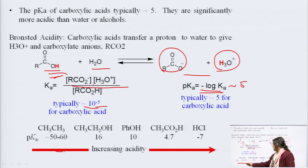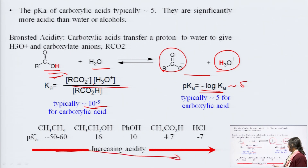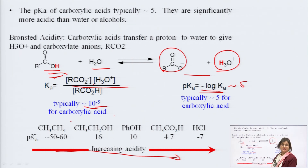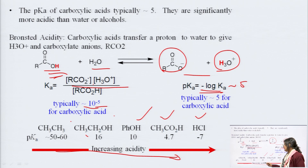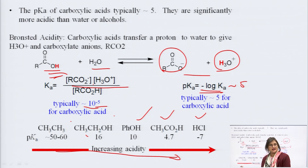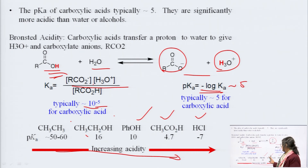You can see an increasing acidity trend going from alkane to alcohol to phenol to acetic acid (carboxylic acid) and finally to hydrochloric acid, which is considered a strong acid.